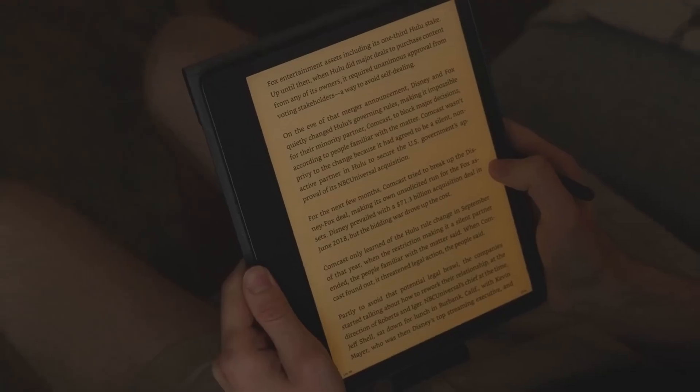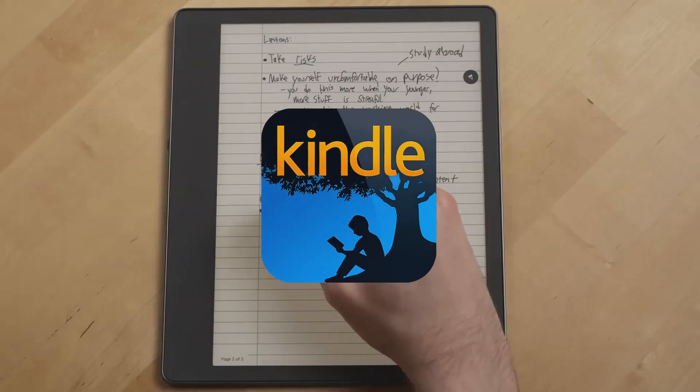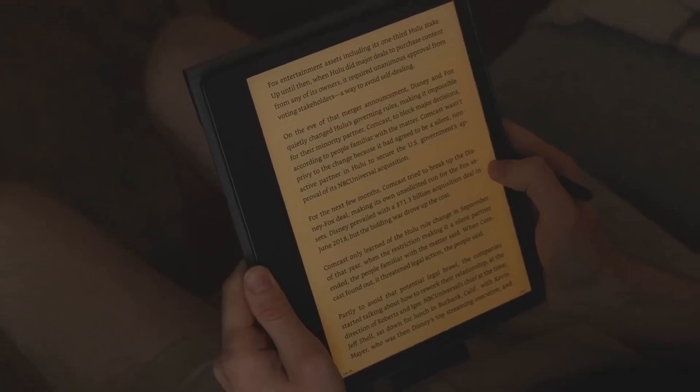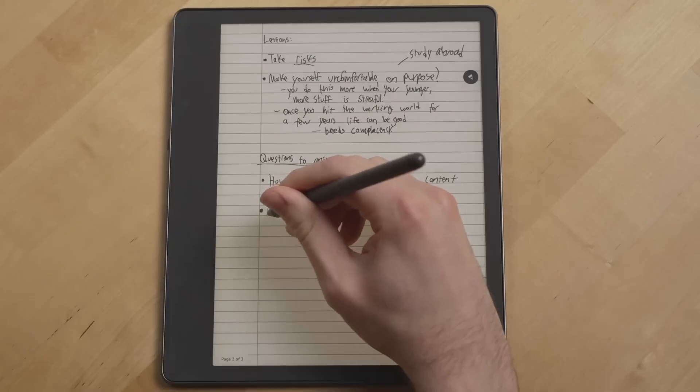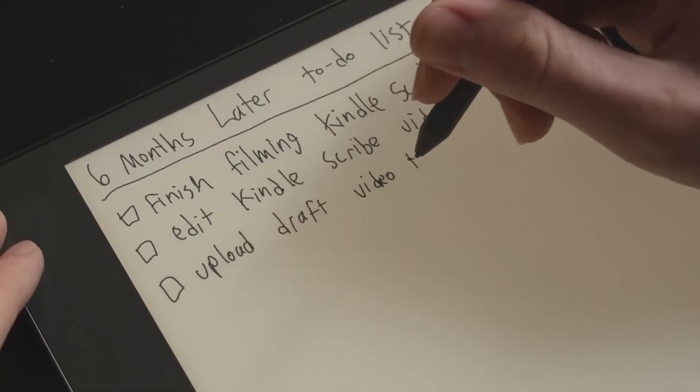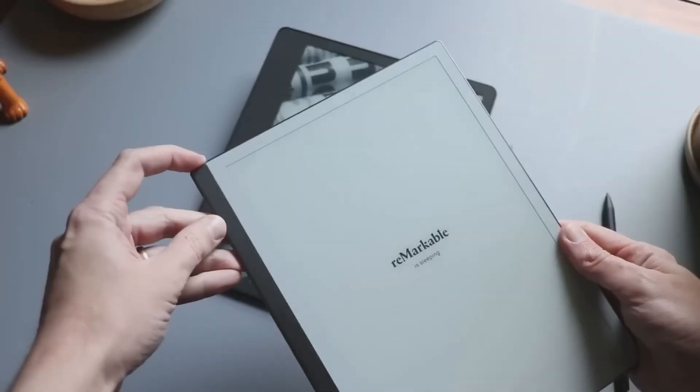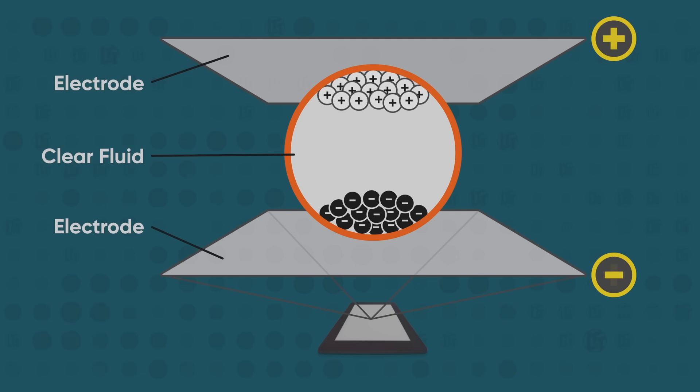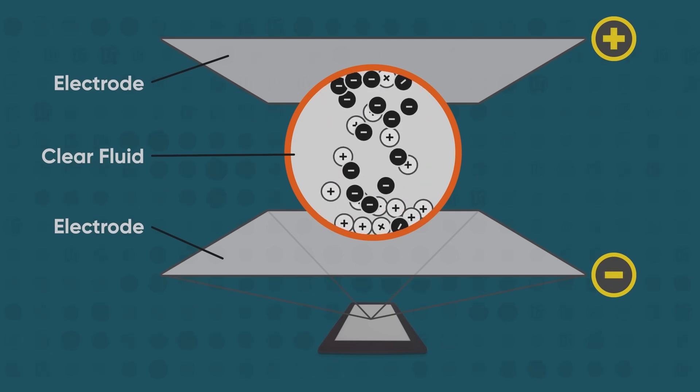If you've ever used an e-reader like a Kindle or another brand, you may have noticed that reading on these devices is much easier on the eyes compared to reading a PDF or a book on your phone, even in dark mode. This is because these displays don't use the conventional LCD or LED technology found in tablets or smartphones. Instead, they work in a completely different way.